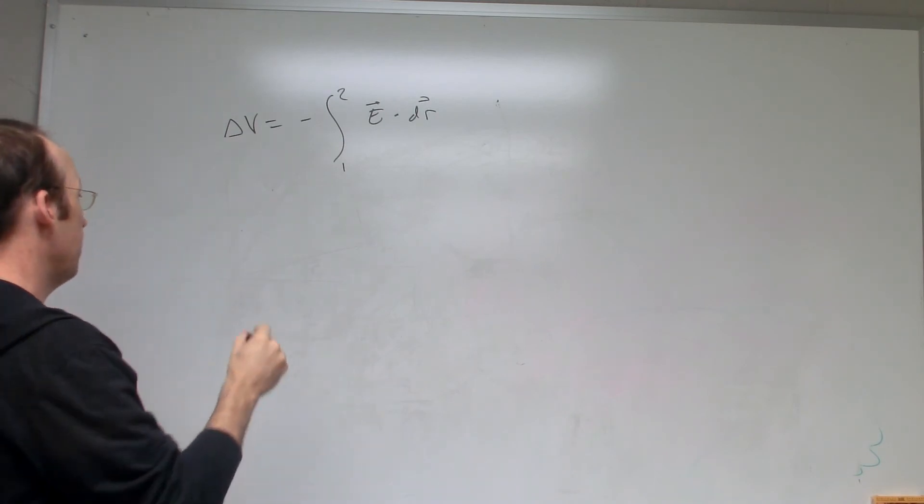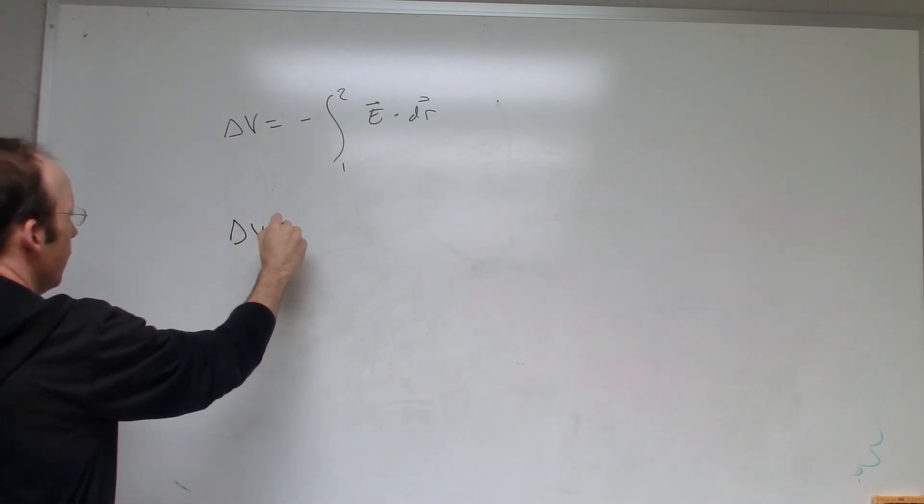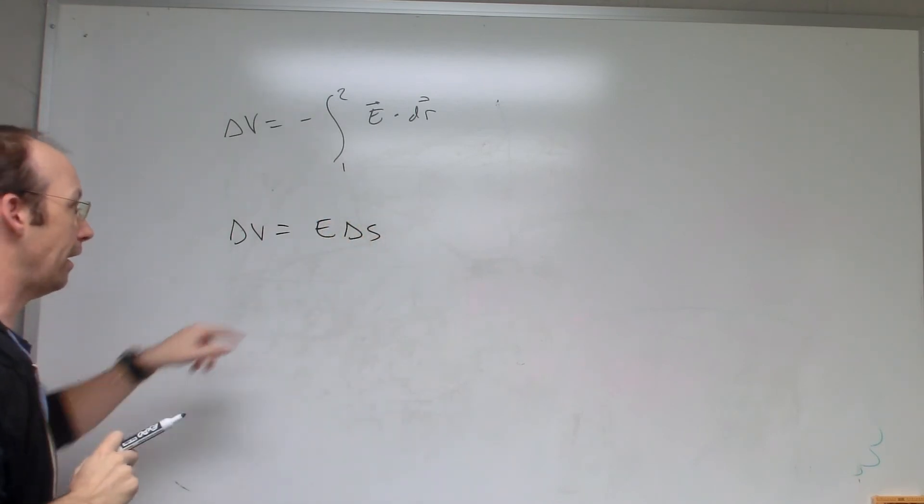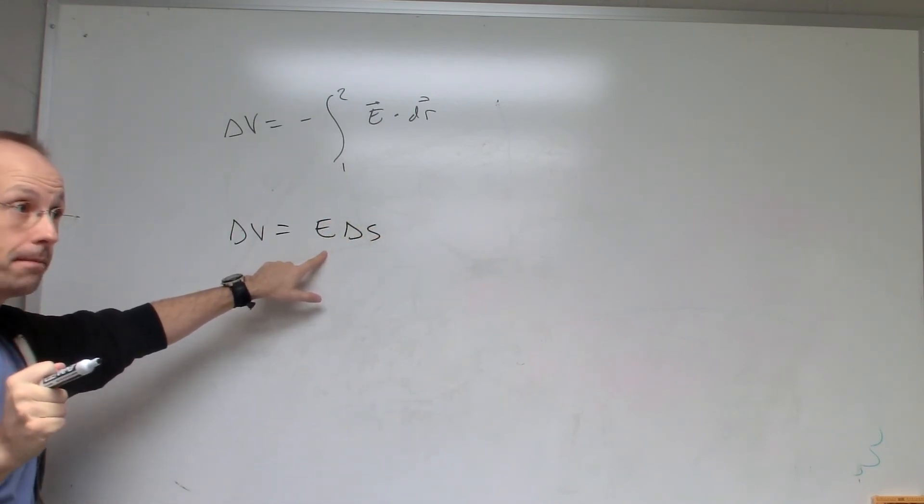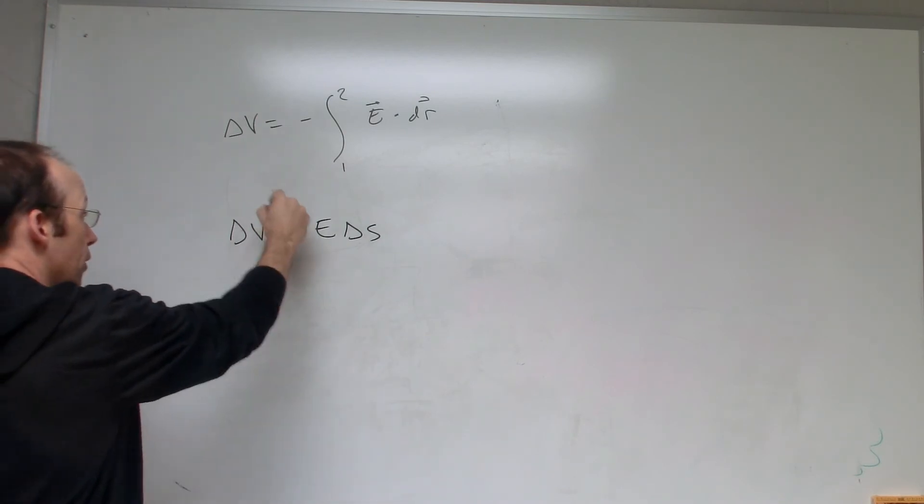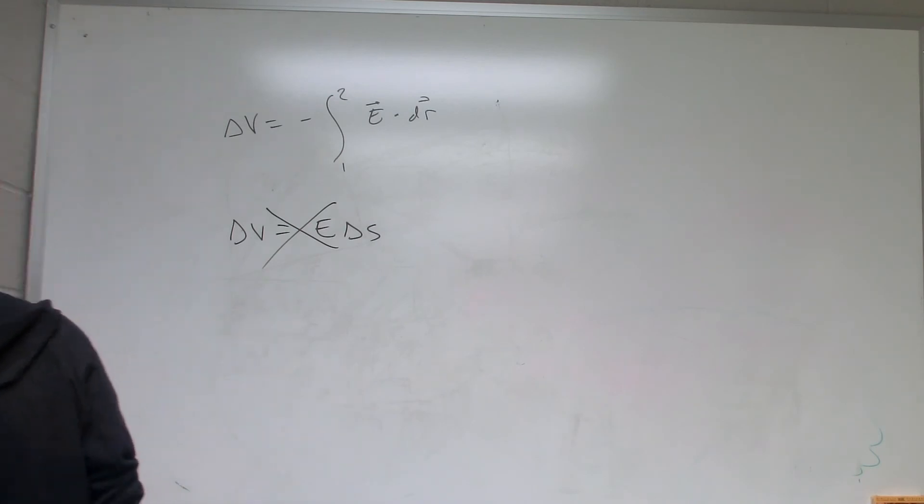The biggest problem is a lot of people say, oh, delta V equals E delta S. That's true only if the electric field is constant. So don't think that's a true thing. It's a special case.